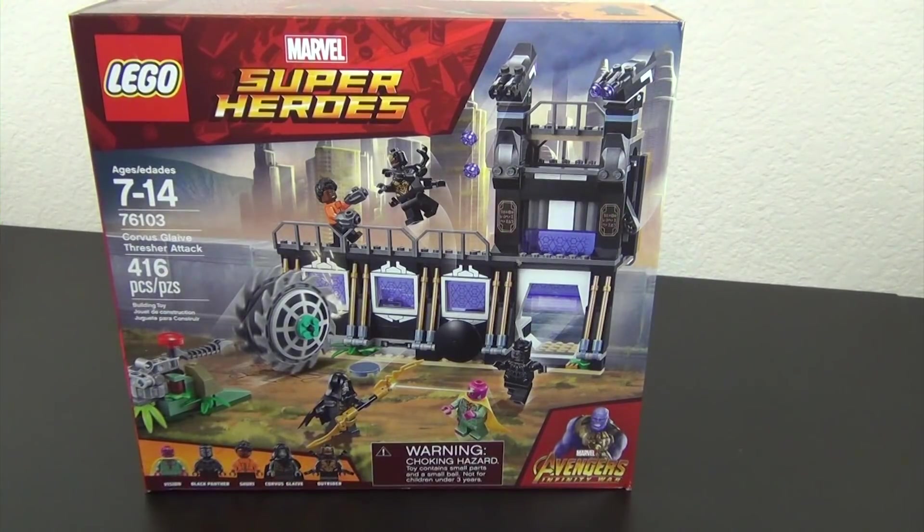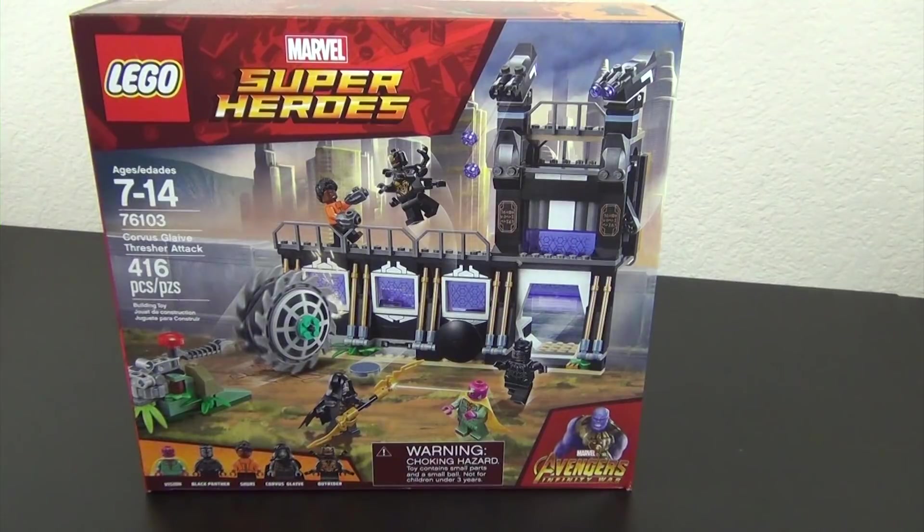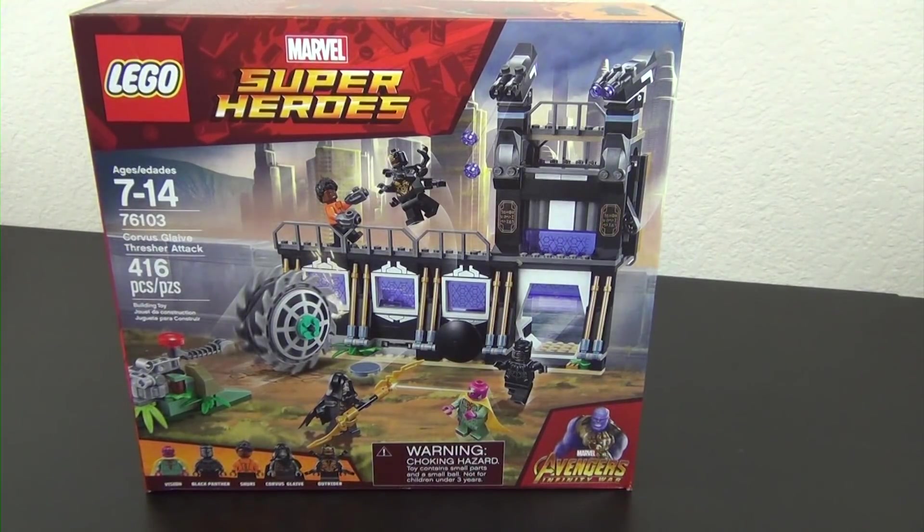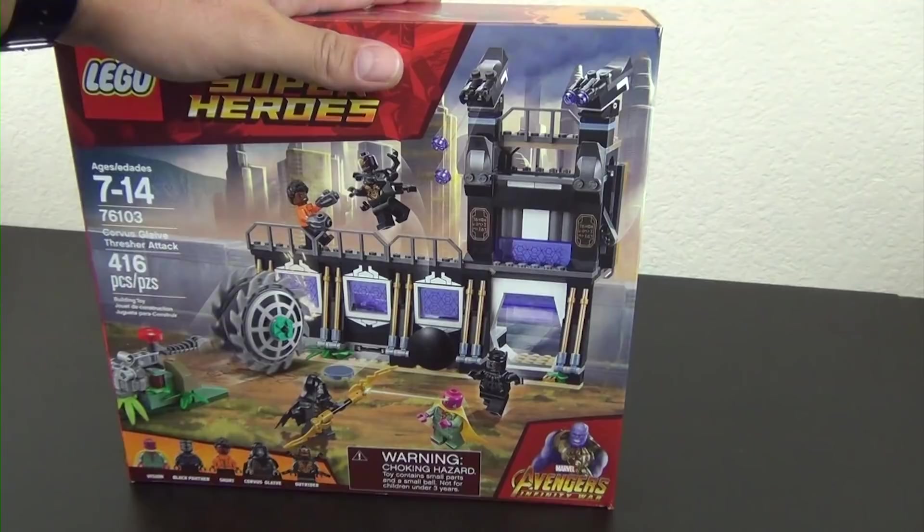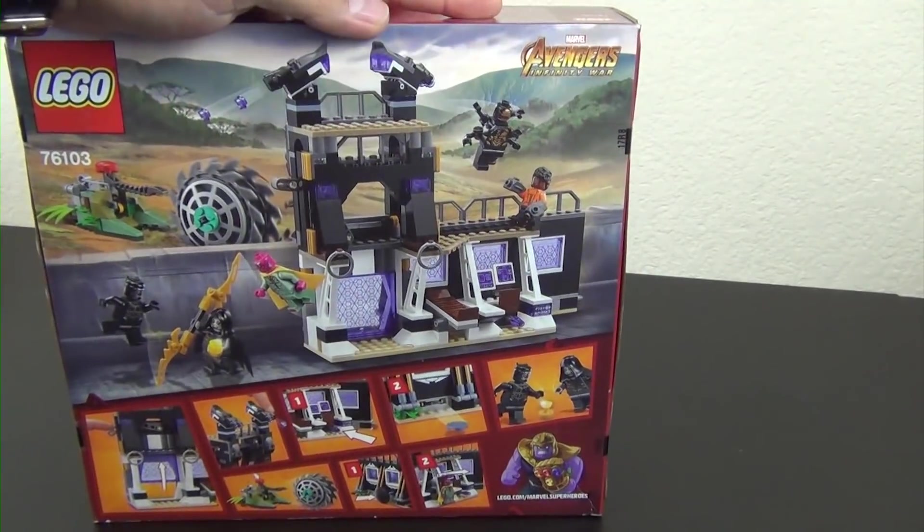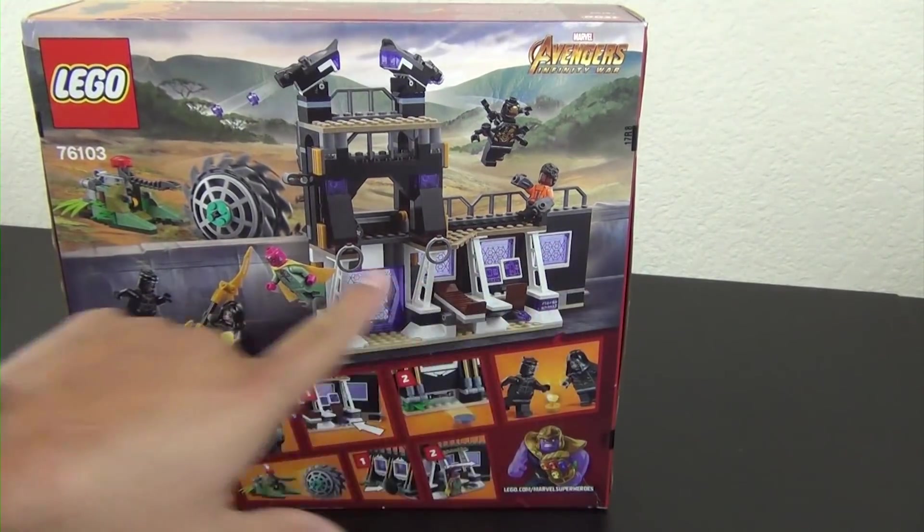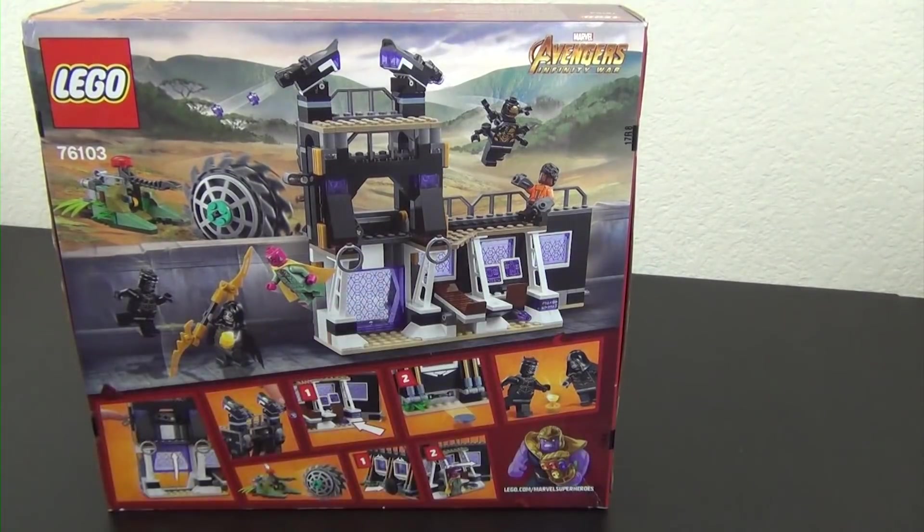Hey everyone, welcome back to the Hidden Brick where today we're going to build the LEGO Marvel Superheroes Corvus Glaive Thresher Attack, set number 76103, 416 pieces. This is from the Avengers Infinity War movie. You can see it's got this little portion of the wall. They like to draw in all the artwork for the rest of it, so you're getting a tease of a set.